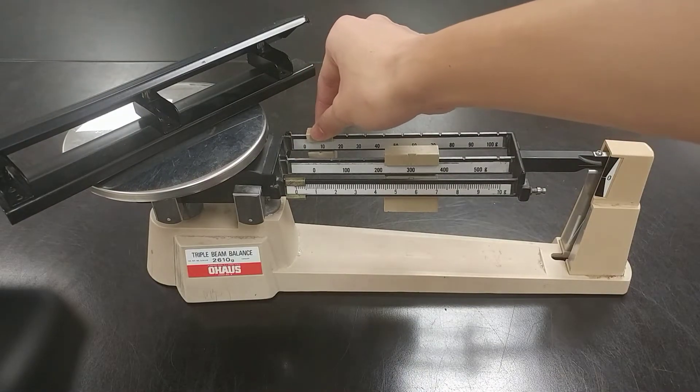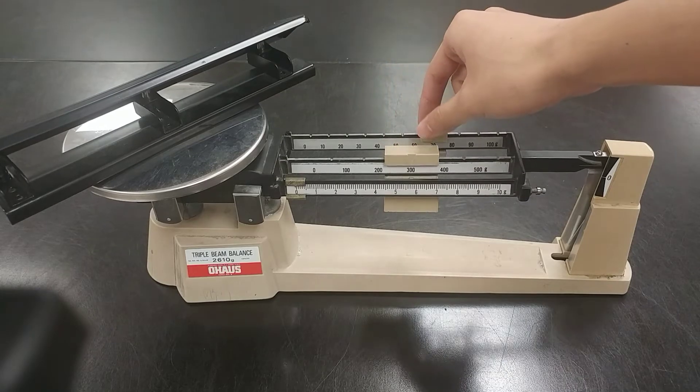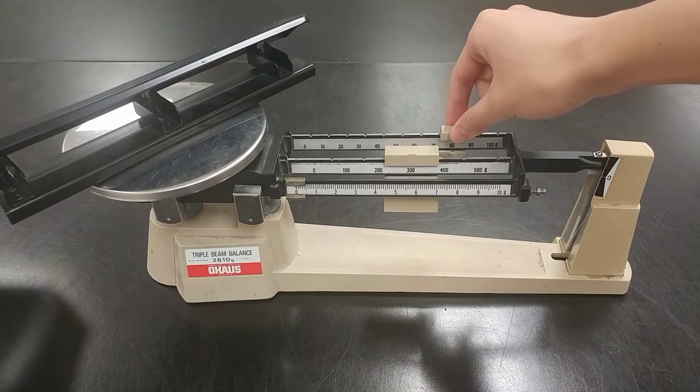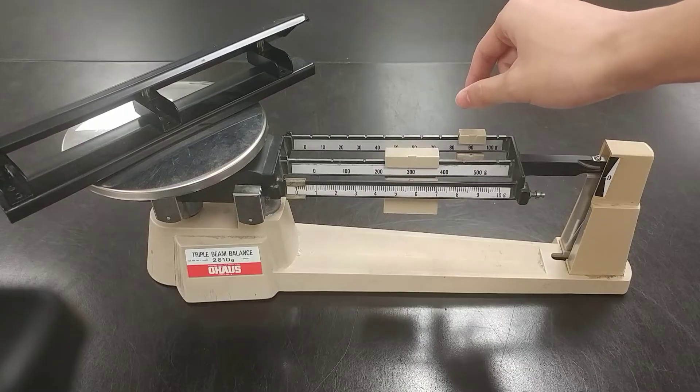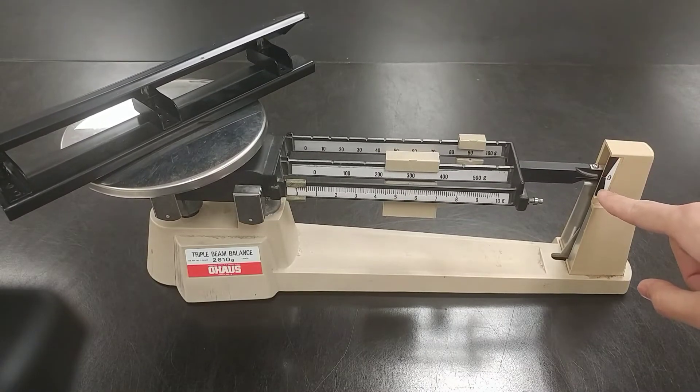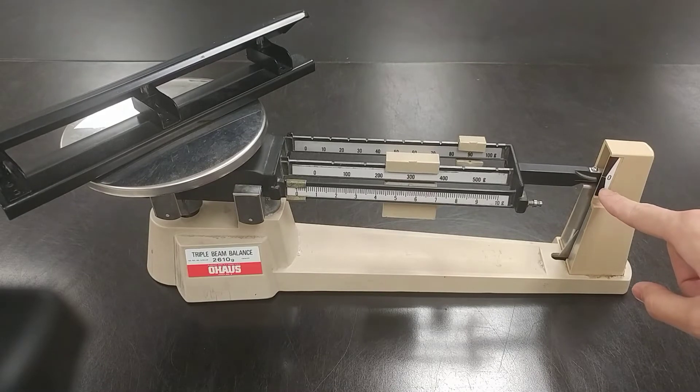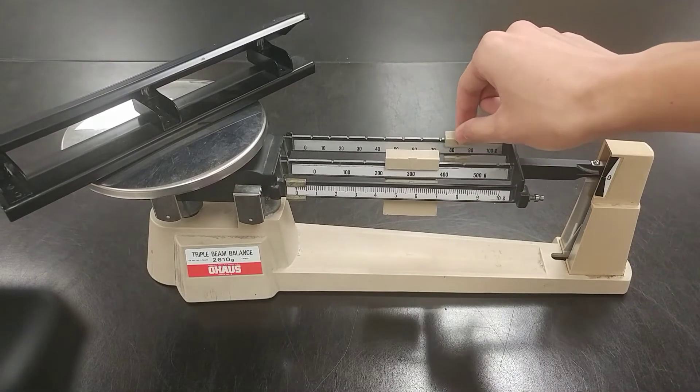Now, go back to the medium one. Moving it: 70, 80, 90. At 90, it goes down. It's too much at 90, so we'll go back to 80.